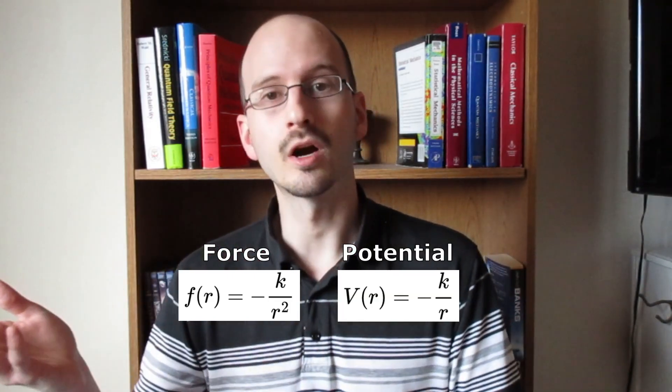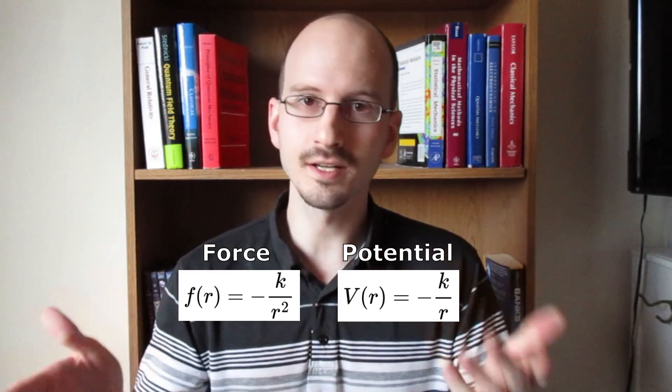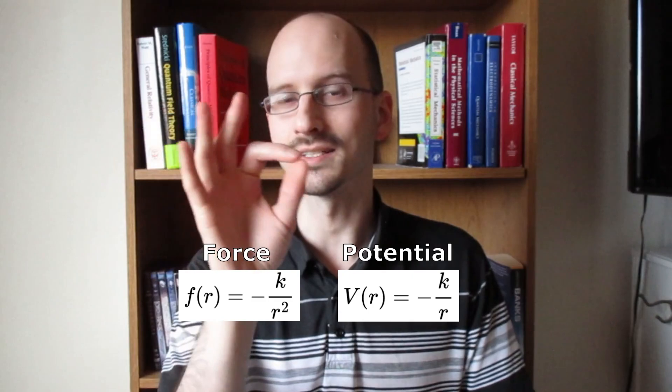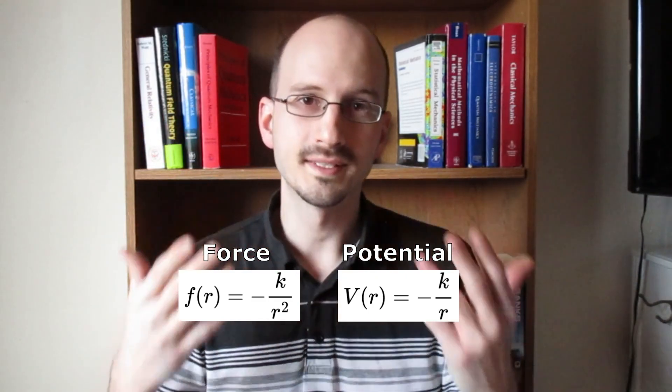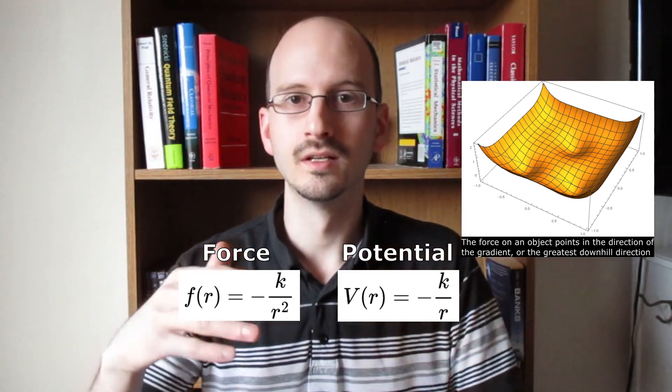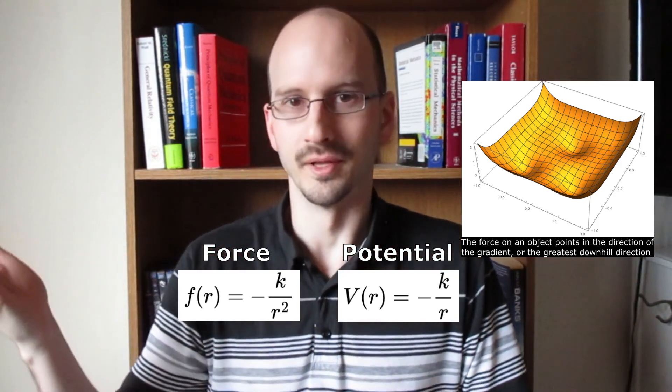A 1 over r squared force means a 1 over r potential. So what's the difference between a force and a potential? A force is what causes an object's velocity to change, whereas a potential is a landscape where objects roll downhill, or in the case of negative charges, roll uphill.